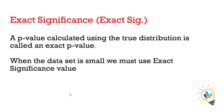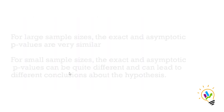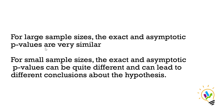A p-value calculated using the true distribution is called an exact p-value. When the data set is small we must use exact significant value — that is, 30 or less than 30. For large samples, the exact and asymptotic p-values are very similar, but for small sample sizes they can be quite different and can lead to different conclusions about the hypothesis. So if your sample size is small, you cannot use asymptotic — use only exact.